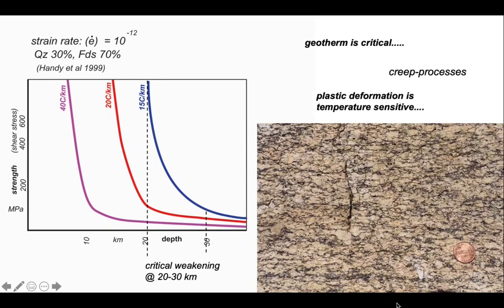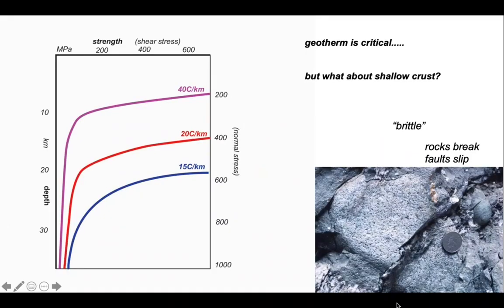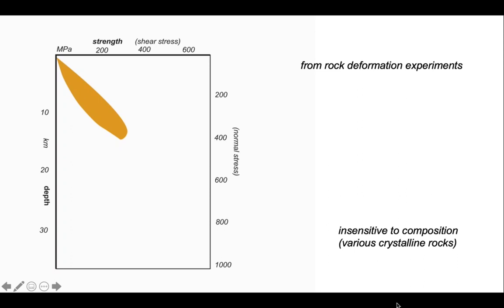Let's think about this in terms of depth and rotate our diagram so depth runs conventionally up and down the screen. We've considered the viscous behavior for temperature-sensitive deformation, but what about the shallow crust? As we've seen from earthquake data, that's deforming by faulting — the deformation is frictionally controlled. At shallower depths it's easier to explore rock behavior using deformation experiments. Combining experimental data from an array of rock deformation experiments — results that apply to granites, gabbros, and peridotites — this behavior is insensitive to composition. There's a quasi-linear relationship between strength and depth, and the slope is the coefficient of friction.